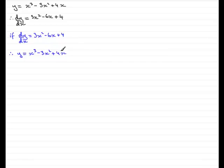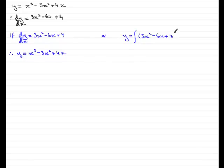Now, this is not the only way of writing the solution. What we can do is use what is called an integral sign — it's like an elongated S. We can say that y equals the integral of 3x squared minus 6x plus 4. We say that we integrate it with respect to x, and we write dx on the end. So, what do we differentiate that gives us this? Well, we've seen that it is x cubed minus 3x squared plus 4x.